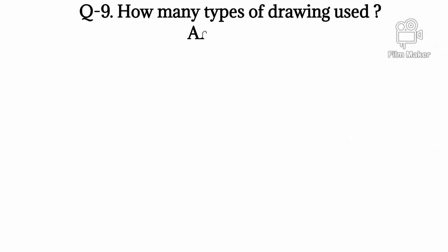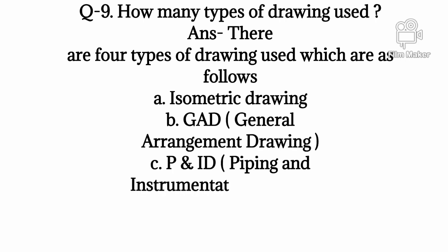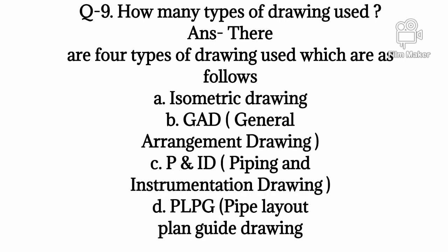Q9: How many types of drawing used? Answer: There are 4 types of drawing used which are as follows. A: Isometric drawing, B: GAD General Arrangement drawing, C: P&ID Piping and Instrumentation drawing, D: PLPG Pipe Layout Plan Guide drawing.